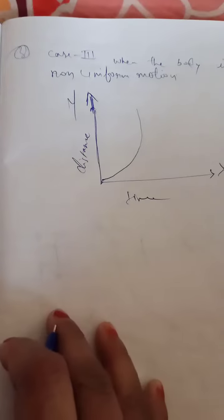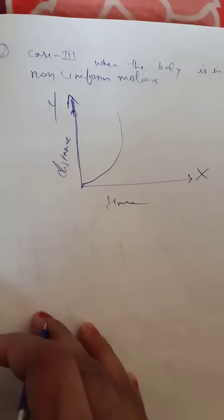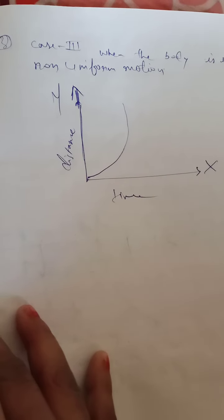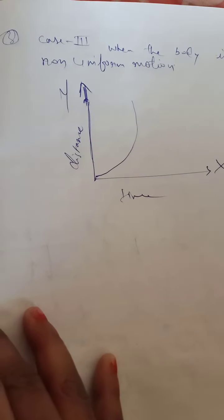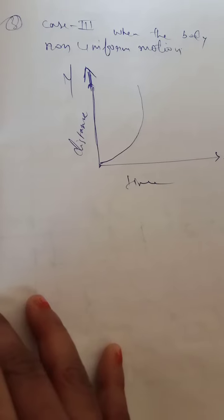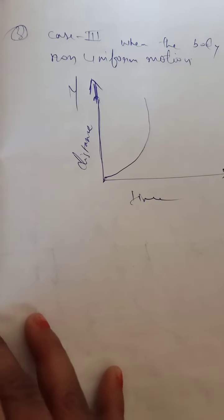The curve can be increasing in one case and decreasing in another case. This is the last case of the distance-time graph when the body is in non-uniform motion.